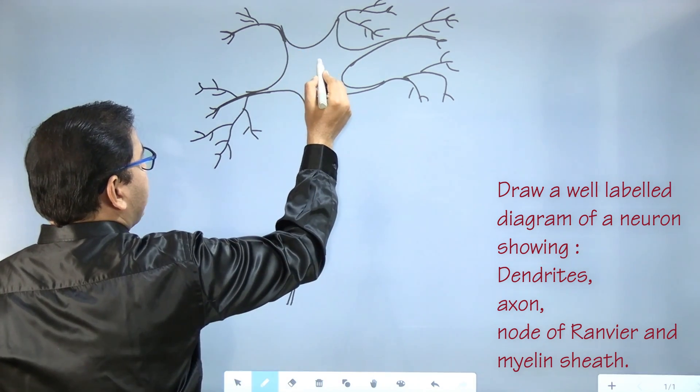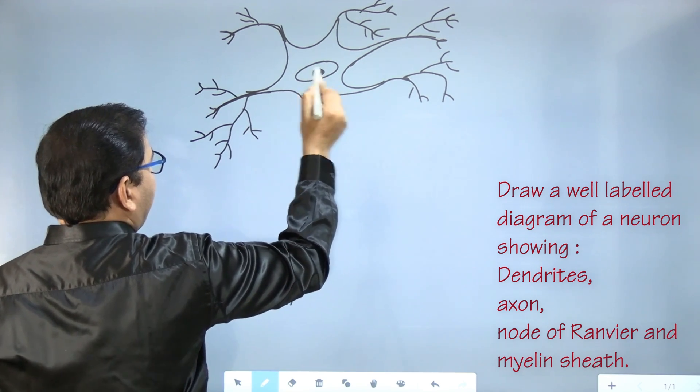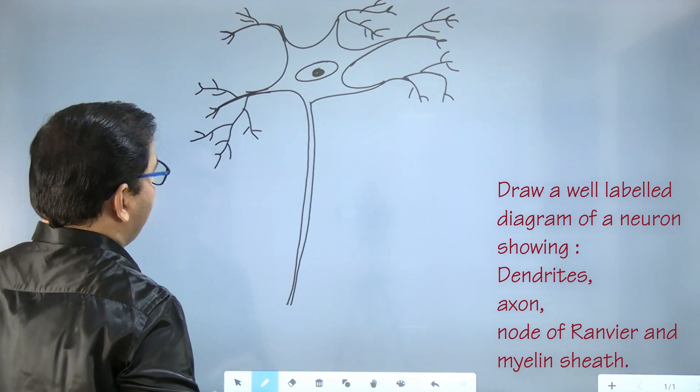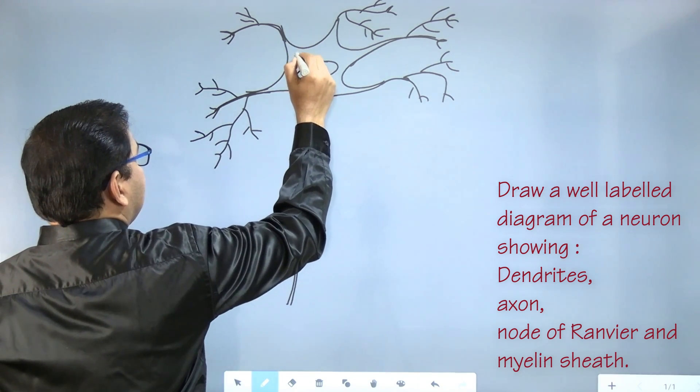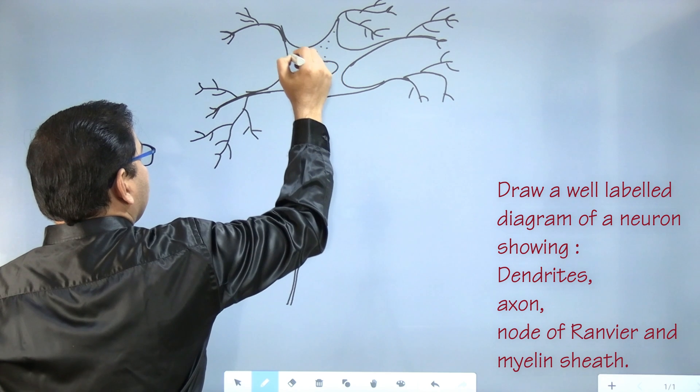Inside the cytone there is a nucleus which we are going to draw like this, and Nissel's granule. For Nissel's granule you are going to draw dots.